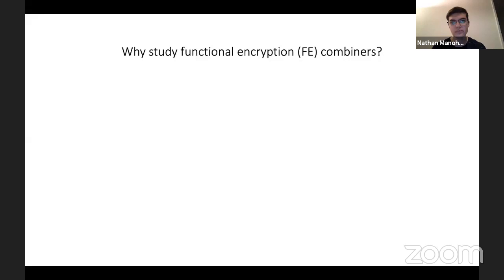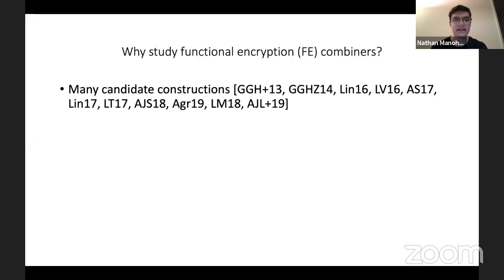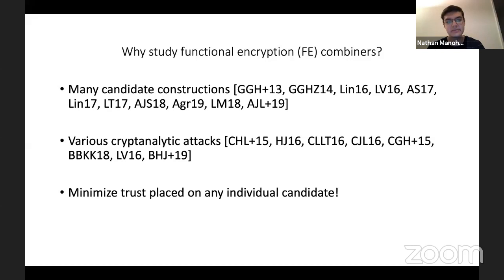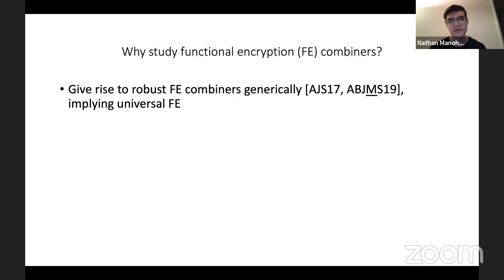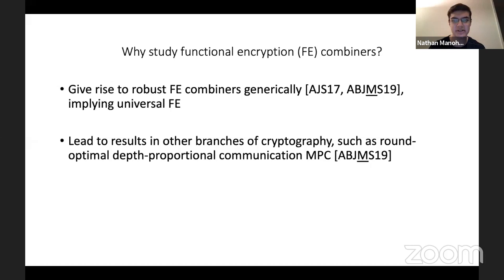Why study functional encryption combiners? Functional encryption is an area with many candidate constructions and various attacks, so we would like to minimize trust in any individual candidate — which is exactly what an FE combiner does. Moreover, using prior work, an FE combiner gives rise to robust combiners generically, which implies universal functional encryption: an explicit construction of FE that is secure whenever FE exists.